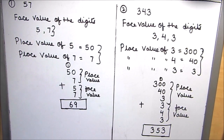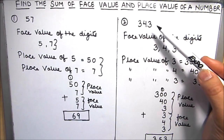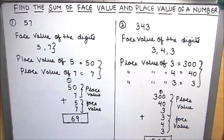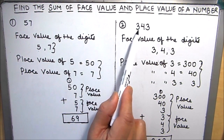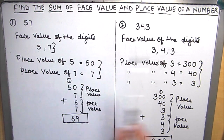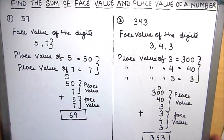There can be other questions in which you have to find the sum of place value of a single digit, so you have to take a single digit in that case. I have shown you how to find the sum of face value and place value of a number — that is, of all the digits in a number. I hope this is helpful to you. Thanks for watching.